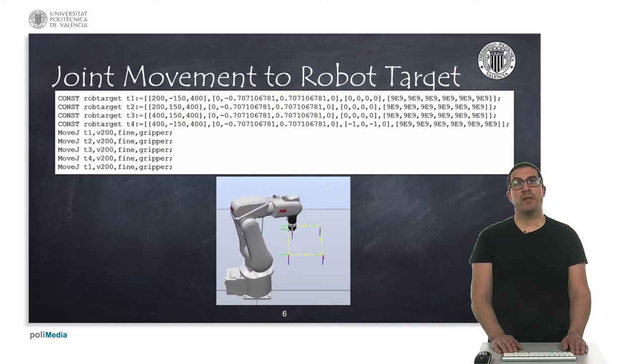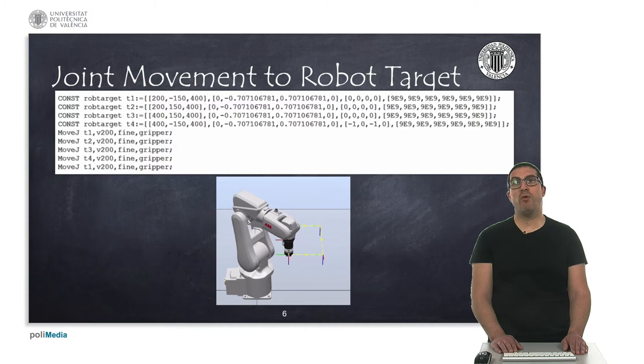Here we can see another code example to move to four specific target positions. As you can see, the movements again are not linear, and for this reason the gripper does not follow the exact rectilinear trajectory.